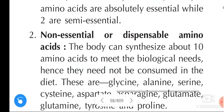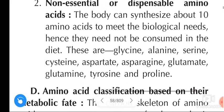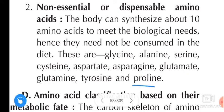Non-essential, or dispensable, amino acids are those the body can synthesize to meet its biological needs, so they need not be consumed in the diet. The 10 non-essential amino acids are: glycine, alanine, serine, cysteine, aspartate, asparagine, glutamate, glutamine, tyrosine, and proline. If you like this explanation, please like, share, and don't forget to subscribe.